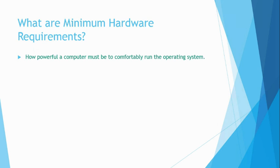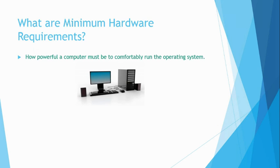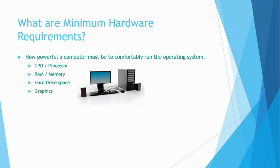To visualise this better, let's imagine that you have a computer and you want to install an operating system, like Windows 8, onto this computer. Minimum hardware requirements tend to focus on how fast the computer's processor must be, the amount of physical RAM memory that must be installed in the computer, the amount of free hard drive space the computer must have, and the graphics capabilities of the computer.